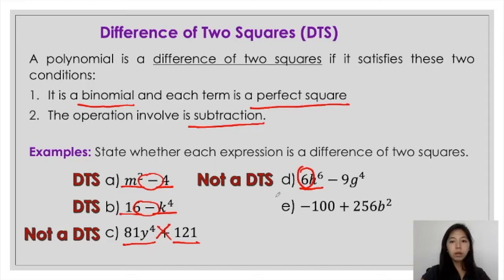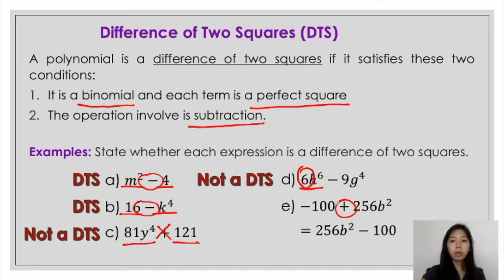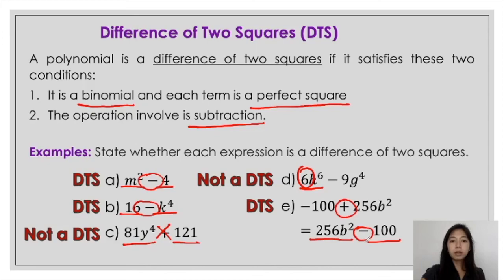Now looking at the last given, the operation involved is addition. But looking closely at the expression, you can actually rewrite this as 256p squared minus 100. With this, notice that the operation involved is now subtraction, satisfying the second condition. For the first condition, it consists of two terms, so that's a binomial. Looking at the terms separately, 256p squared is a perfect square, and 100 is also a perfect square. So following those two conditions, this given is a difference of two squares.